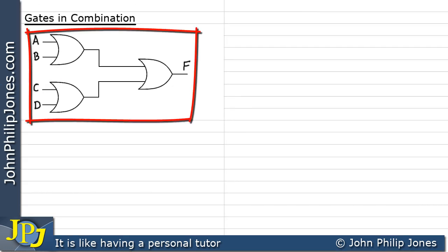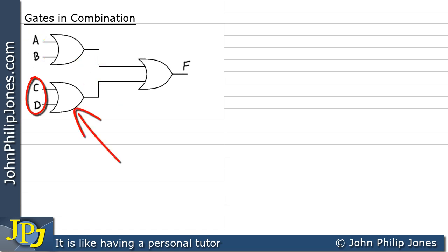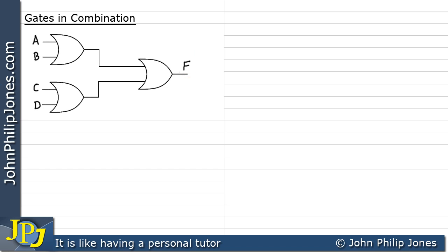This is an example of a combinational logic circuit that has three OR gates. This OR gate has inputs A and B, and this one has inputs C and D. When we're using gates in combination, it's important to be able to derive the Boolean representation for the output F. We will achieve that by looking at the output of each gate in turn.